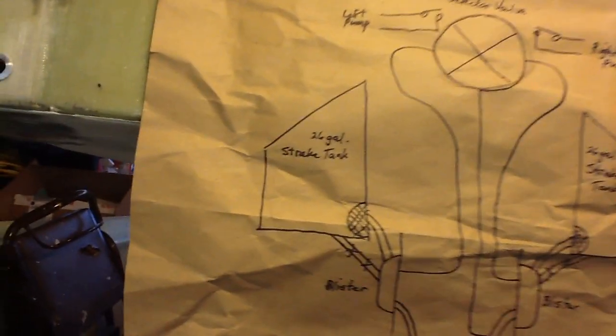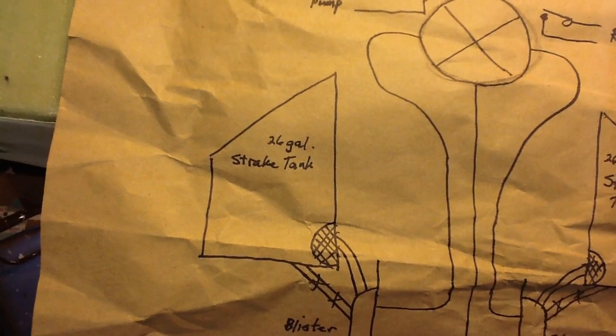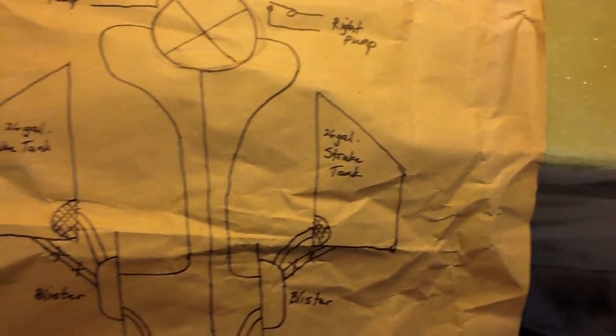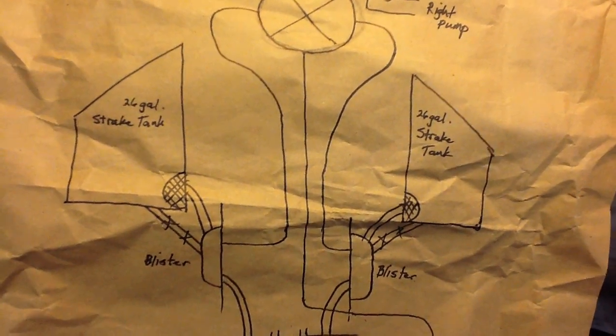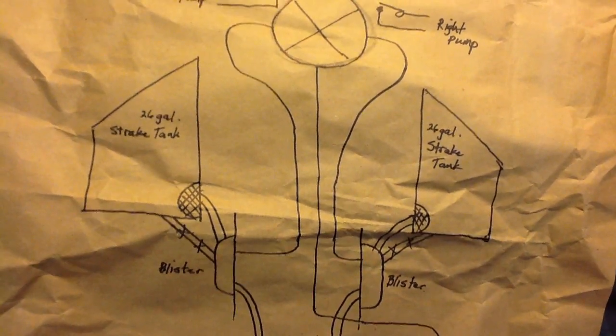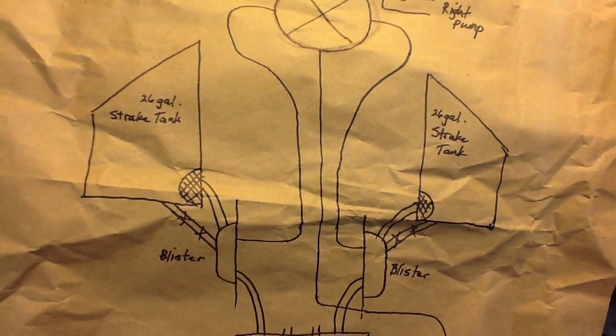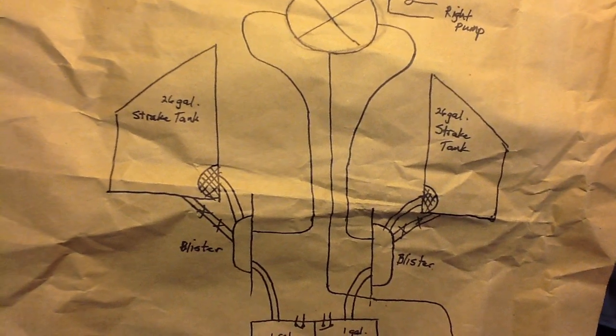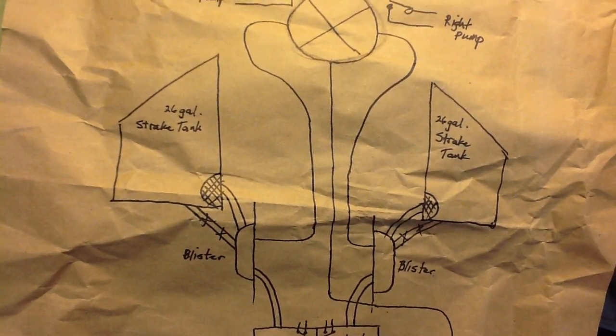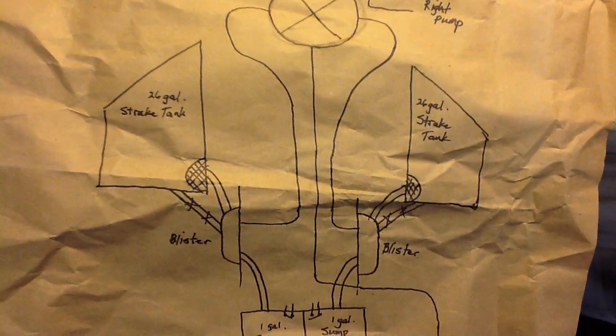And then you have two 26-gallon tanks, one on each strake, and a screen in the corner. Forgive my error on the sketch there. The screen drains into a blister under the strake on each side, and then the fuel is normally selected by the selector valve and goes onto the engine.